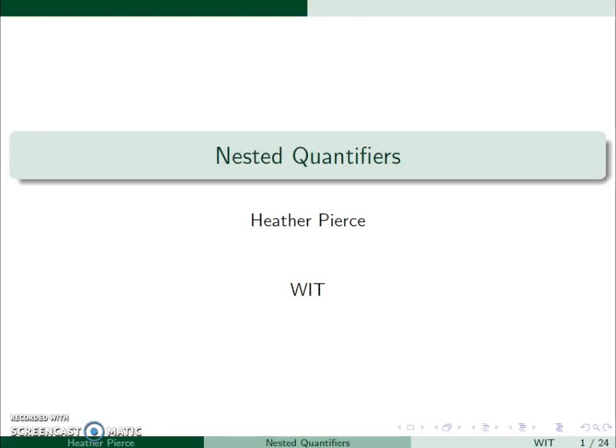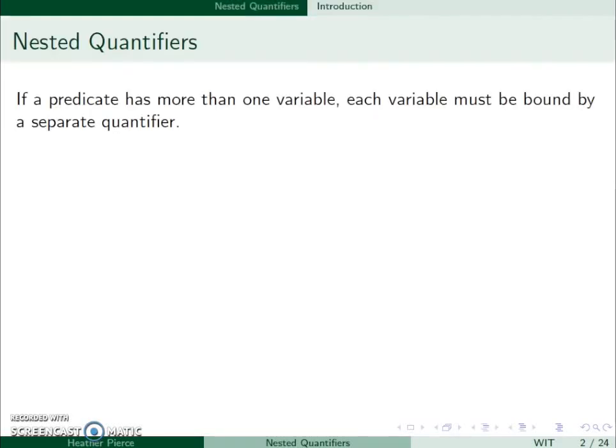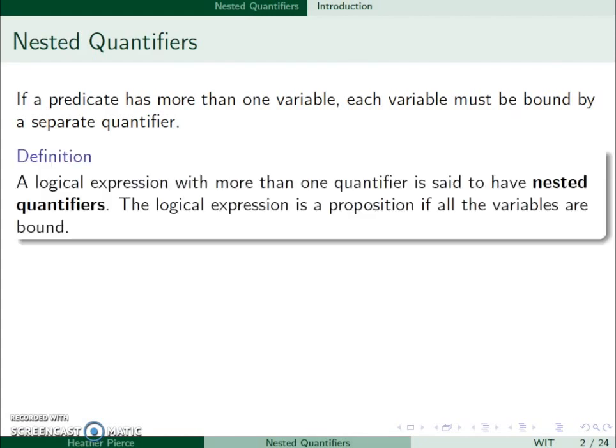Here we'll discuss nested quantifiers. If a predicate has more than one variable, each variable has to be bound by a different quantifier. A logical expression with more than one quantifier is said to have nested quantifiers. And as long as all the variables are bound, this is still a proposition.